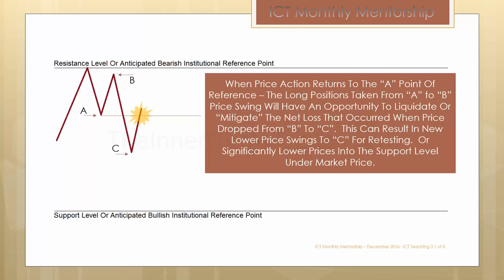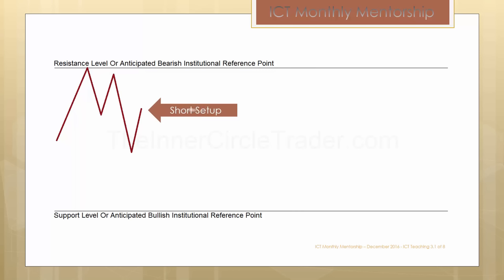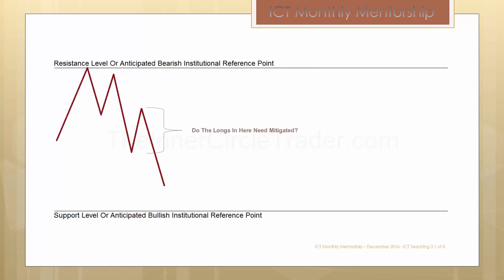This can result in new lower price swings retesting C or a significantly lower price move into a support level under the market price. This is an opportunity to sell whatever particular market or asset class this is. As the market breaks lower, it does not mean you've missed an opportunity — it just means a new opportunity is unfolding. If you have a belief that price is going to be moving lower longer term, that there's an unrealized lower support level or sell side liquidity not yet tapped, we could be viewing this short-term rally as an opportunity for a new selling opportunity.